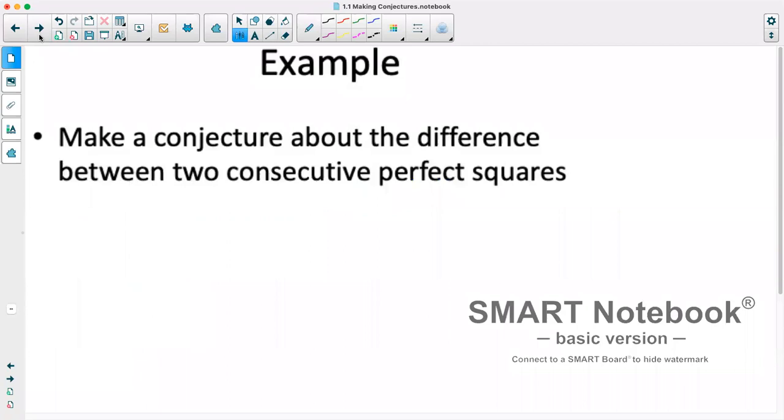Okay, next example, make a conjecture about the difference between two consecutive perfect squares. So this requires some knowledge about our language associated with mathematics. So difference we know is subtraction, and then if we have two consecutive perfect squares, that's two perfect squares in a row. So we're going to subtract one perfect square from another.